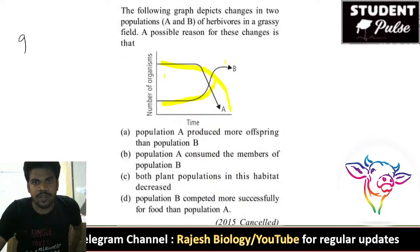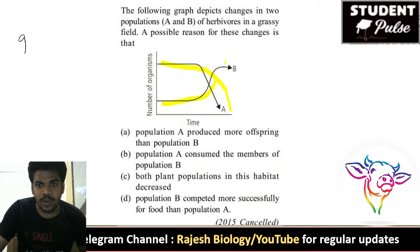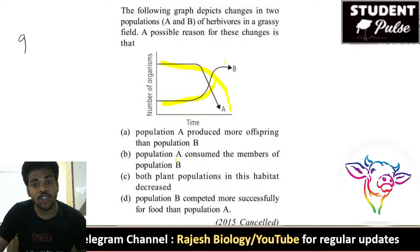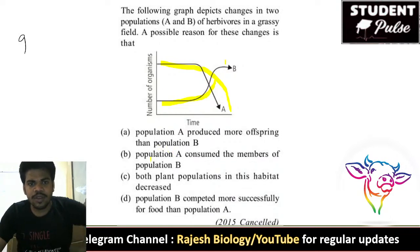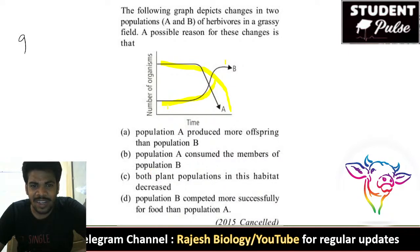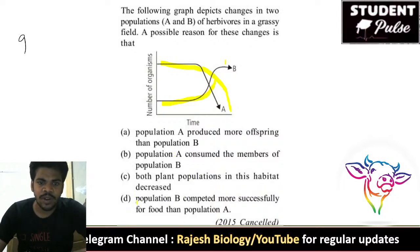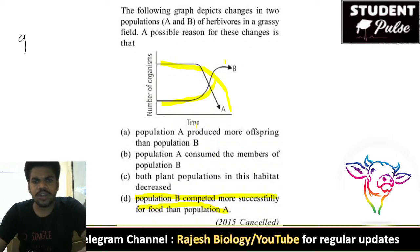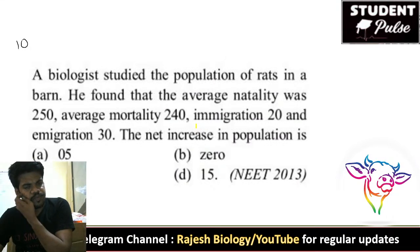A possible reason for population changes: population A produced more offspring than population B — no, that is wrong. Population A decreased while population B increased. So population B competed more successfully for the food than population A. That is the right answer — population B successfully competed for food in competition with A.